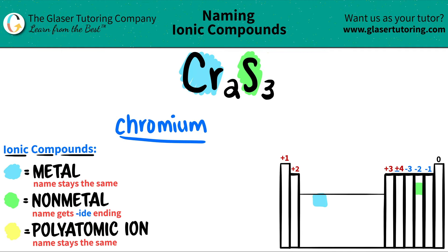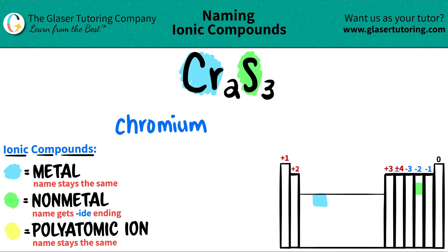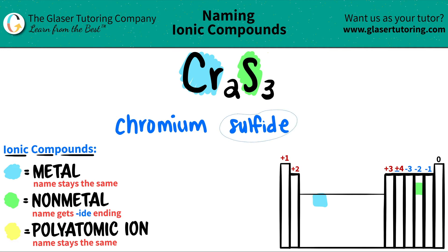So we've got chromium, and now the non-metal — in this case sulfur — gets the IDE ending. So it was sulfur on the periodic table, but now it's going to be sulfide. The UR gets dropped and I add an IDE to get sulfide, the IDE ending.